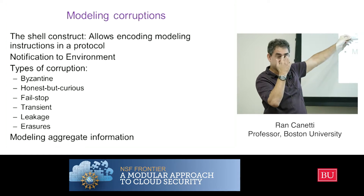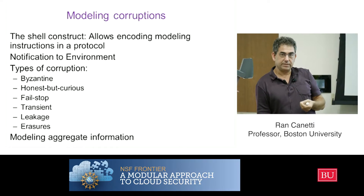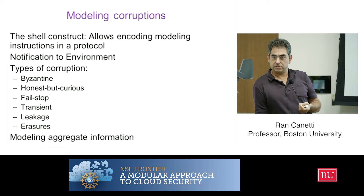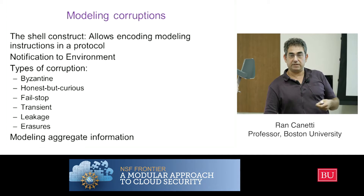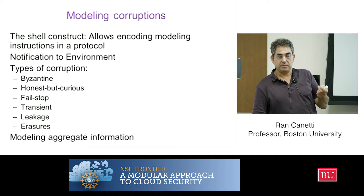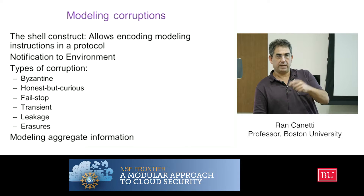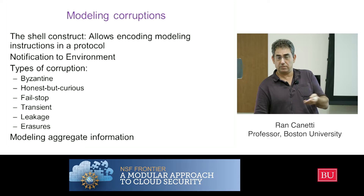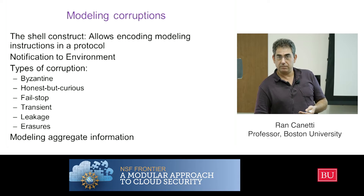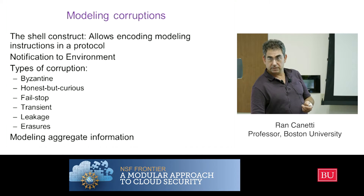We can also talk about leakage. We can actually capture more intricate things like side-channel attacks or leakage by way of a leakage corruption. The adversary sends us some function that we apply to our local state and return to the adversary — whether you want to model some arbitrary function, a noisy function, whatever kind of leakage or attack you want to model. The adversary gives us a function and we evaluate it and give it back. So we can capture leakage.